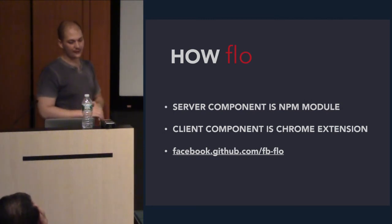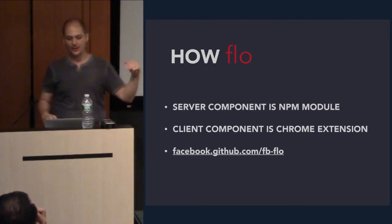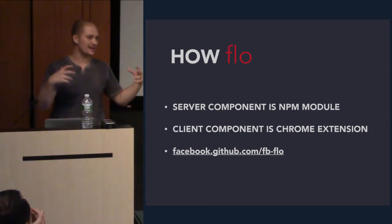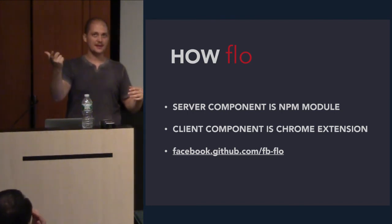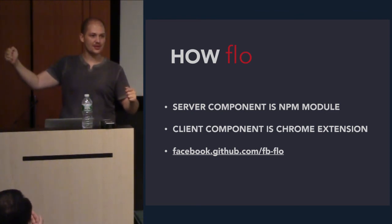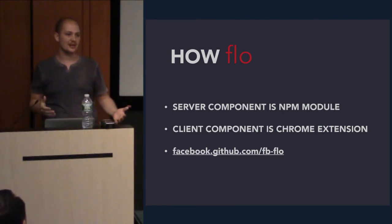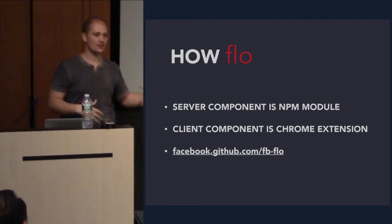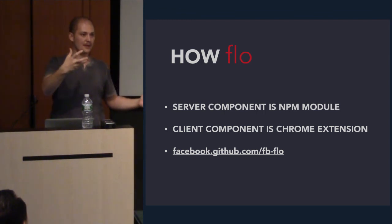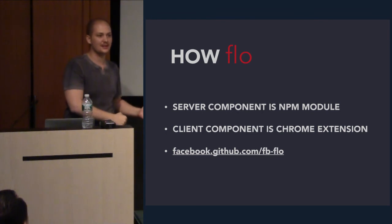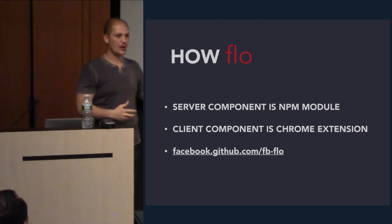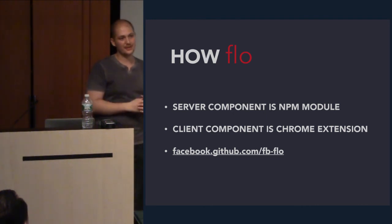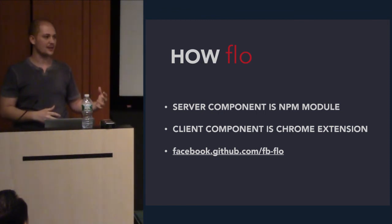So how is Flow built? Flow has two components: a server-side component and a client component. The server-side component is an NPM module you require, and then you write a simple function I call a resolver — a mapping between the static resource and your local file system. It gives you file watching capability. When files change, your function is called and should return the contents to be sent to the client. The client is a Chrome extension that hot-swaps the code and gets the new code in so you see it automatically without refreshing the browser.